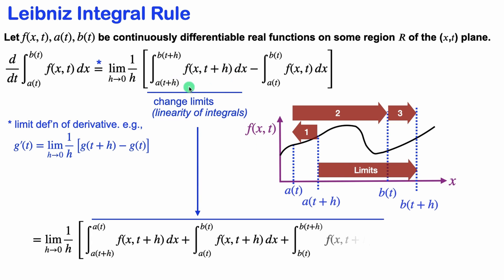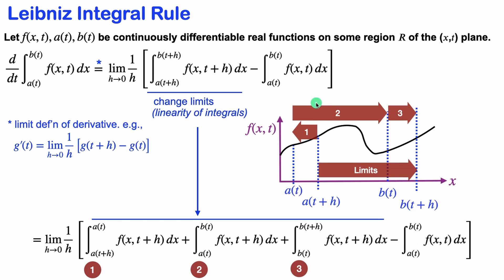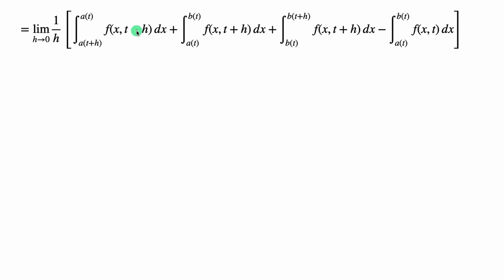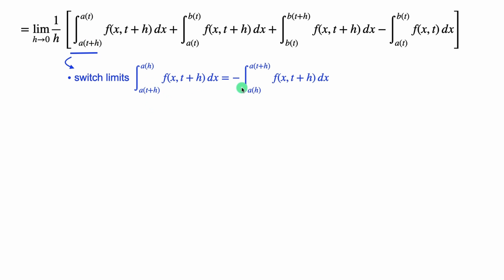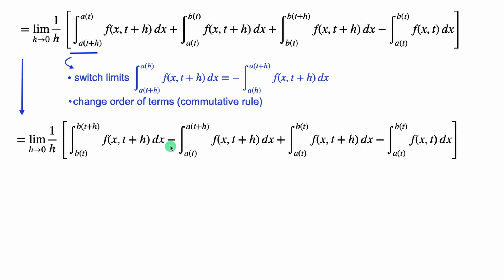We're going to break this term up into three terms. This is where our integral uses the first set of limits, then the second set, then the third set. This first term is kind of backwards — we usually like to have t plus h on top, so we're going to flip this around. If you flip the limits, we have to introduce a negative sign. The second and fourth terms have the same limits, so we're going to move those terms together using the commutative rule.